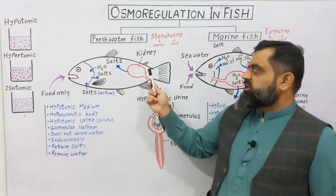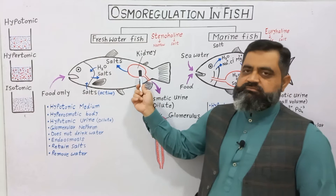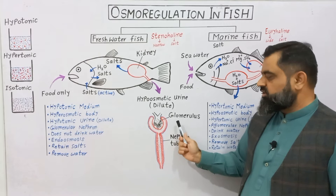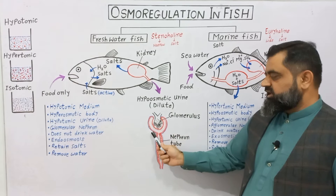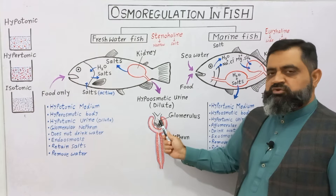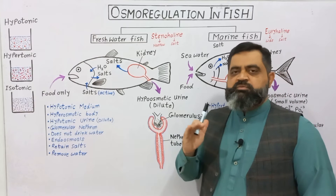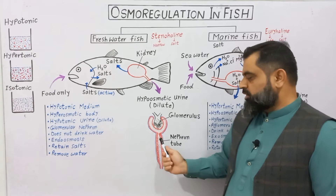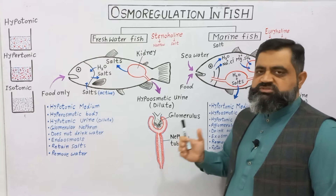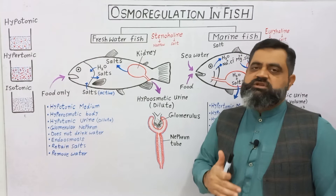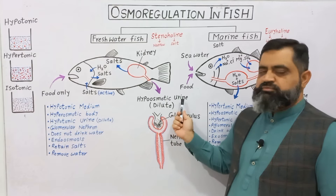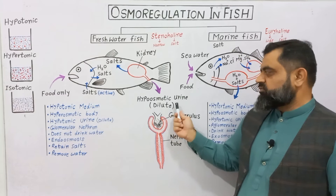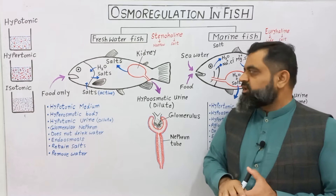Their kidneys are special — they are glomerular kidneys. Looking at the diagram, this is the Bowman's capsule of the nephron which contains blood capillaries in the form of a glomerulus. They have a short nephron tubule. The glomerulus filters blood and a maximum amount of water is taken out and released as urine, while a minimum amount of water is reabsorbed from the tubule. Salts are retained while water is removed, so they produce hypoosmotic urine containing very few salts but a large amount of water — very dilute and in large quantity.